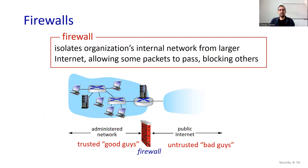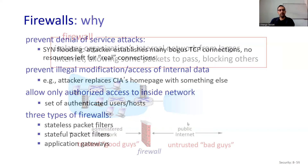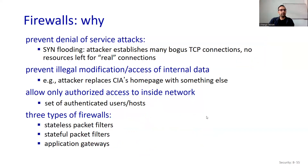A firewall isolates an organization's internal network from the larger internet, allowing some packets to pass and blocking others. The firewall has rules, and depending on those rules, it allows or blocks packets. So why do we use firewalls?